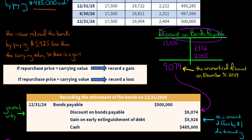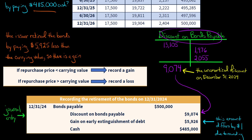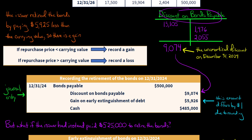Some of you who are astute might notice the gain amount is off by a dollar — that's simply due to rounding, since I did calculations in Excel and left out cents. No need to panic. This is the gain on the early retirement of the debt. You can calculate the gain by finding the difference between the repurchase price and the carrying value at retirement, or you can construct the journal entry and use the plug figure — in this case a credit of $5,926 — to make debits equal credits.